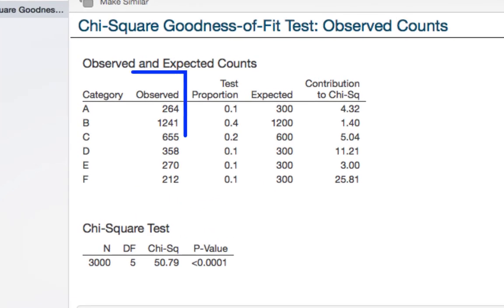Here we have our observed counts, and those came right from the table in Wiley Plus. The test proportions, which came from our null hypothesis. The expected counts, which Minitab Express computed as N times p sub i for each group, and the contributions to the chi-square test statistic.